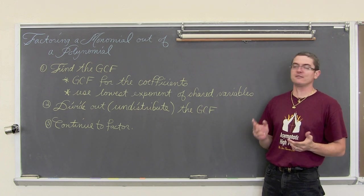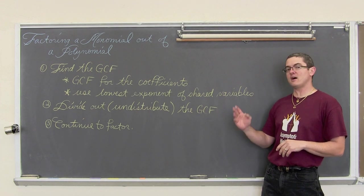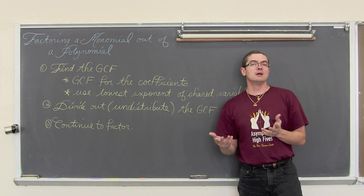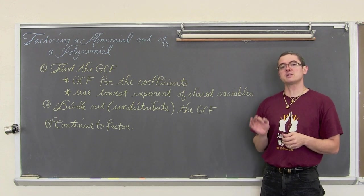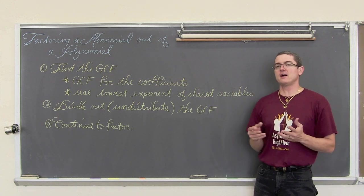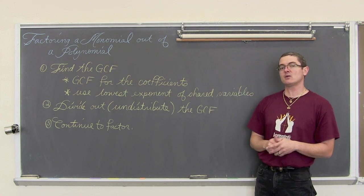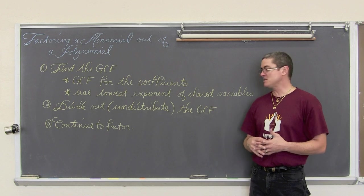Then, if any of the terms share a common variable, we are going to use the lowest exponent that we can find for that common variable. So if all of your terms have an x in them, maybe one has an x to the fifth and one has an x squared, we will be able to take out the lowest exponent or x squared. Once we decide and work out what the GCF is, we are going to go ahead and divide that out, or your teacher may be calling it undistribute that GCF.